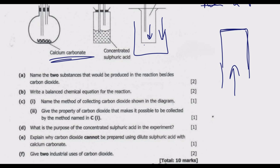We look at question C, Roman numeral two: give the property of carbon dioxide that makes it possible to be collected by the method named in C Roman numeral one. The property is that carbon dioxide is denser than air.